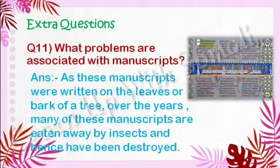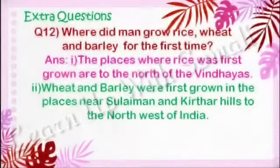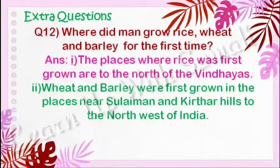Question number eleven: What problems are associated with manuscripts? As these manuscripts were written on leaves or the bark of a tree, over the years many of these manuscripts have been eaten away by insects and hence destroyed. Question number twelve: Where did man grow rice, wheat and barley for the first time? The places where rice was first grown are to the north of the Vindhyas, and wheat and barley were first grown in the places near Sulaiman and Kirthar hills to the north-west of India.